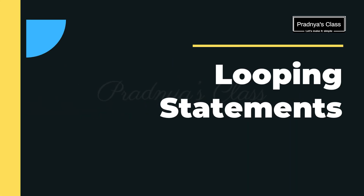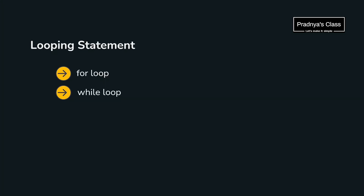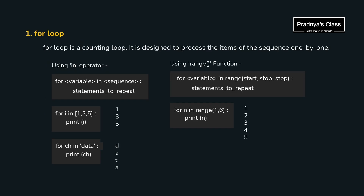Here is the most important concept — looping. In Python there are two loops. We generally use the for loop because it is easy to write, while the while loop is used for creating infinite loops in menu-driven programs. For the for loop, we can use it in two ways: using the in membership operator to iterate over a sequence, or using the range function. With 'for i in list', i takes each value of the list. Similarly, iterating over a string gives individual characters.